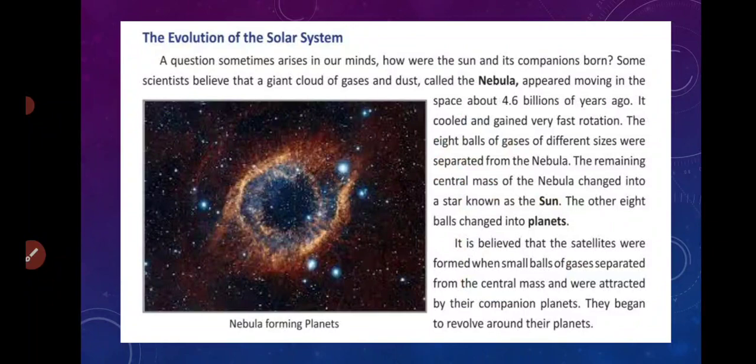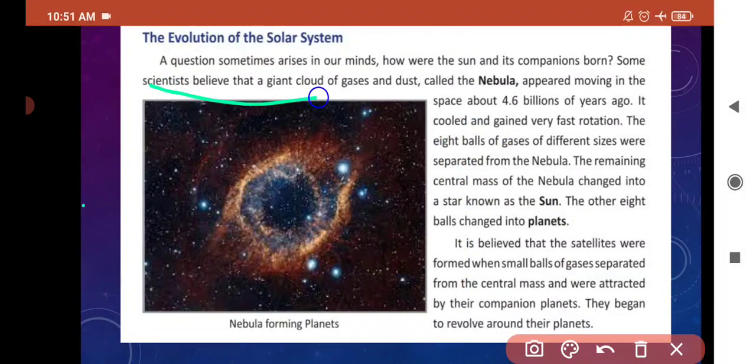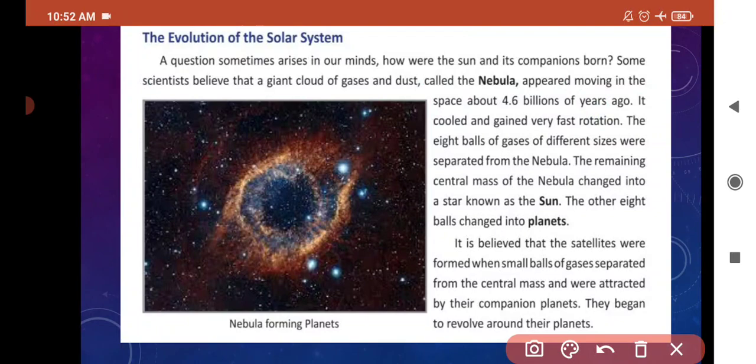Now, the evolution of the solar system — solar system form कैसे हुआ? This is the main question. Some scientists believe that a giant cloud of gases and dust called the nebula appeared moving in space about 4.6 billion years ago. वो space में continuously move कर रहा था.